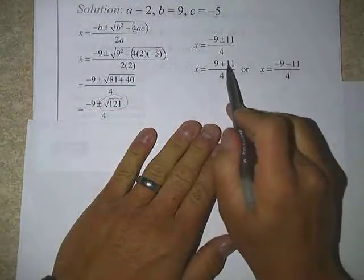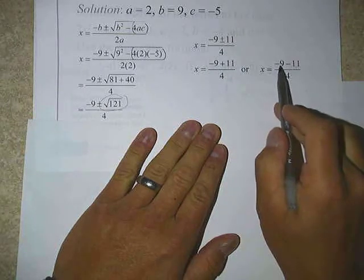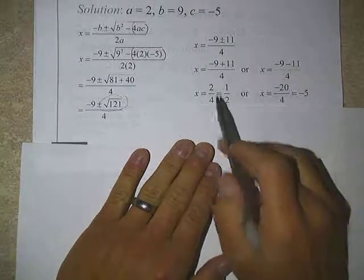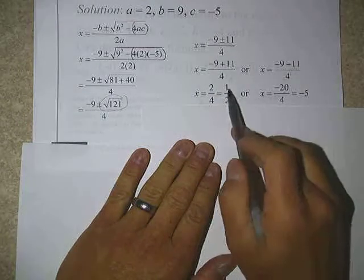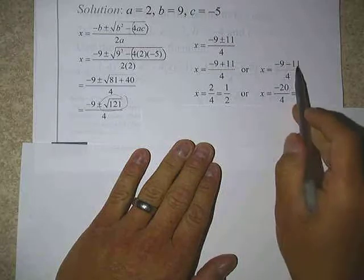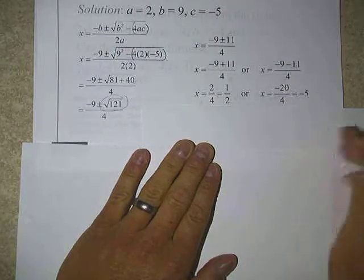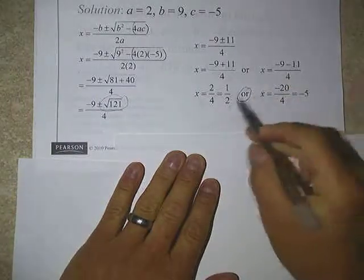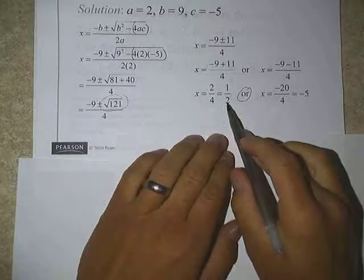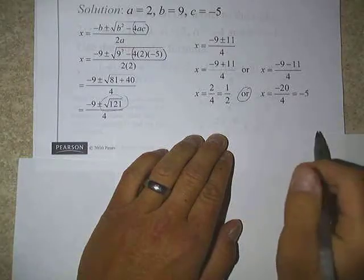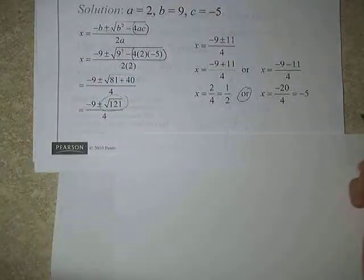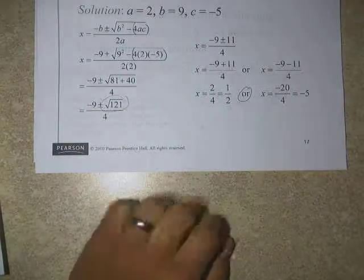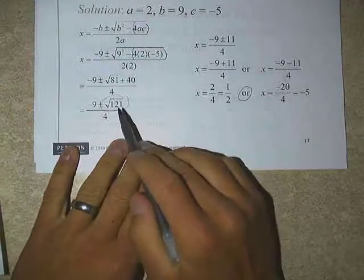So we'll do these as two separate problems. Negative nine plus 11 divided by four, or negative nine minus 11 divided by four. And if we do the math on both of those, we wind up with two on top, four on the bottom, or one half as one of our answers. And in this case, we get negative 20 on top divided by four would be negative five. So again, our two answers here would be either one half or, remember, or here's a keyword. When we find two answers here, the two solutions are one half or negative five.